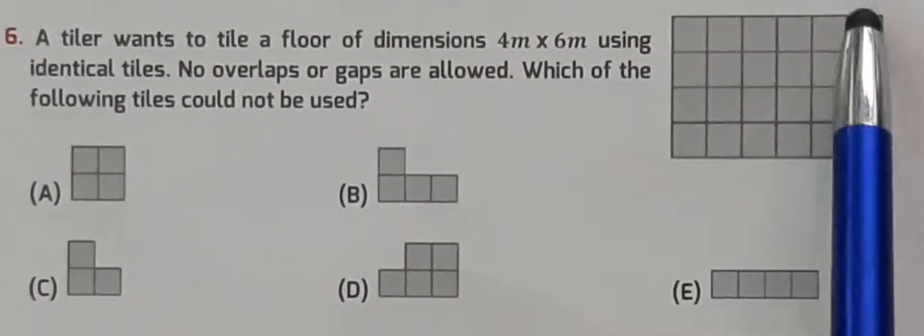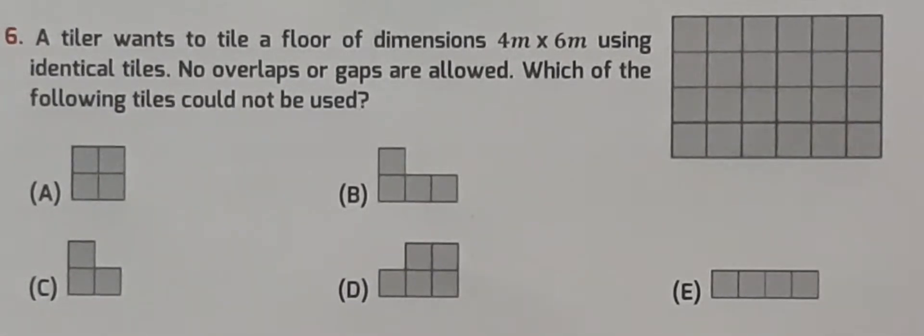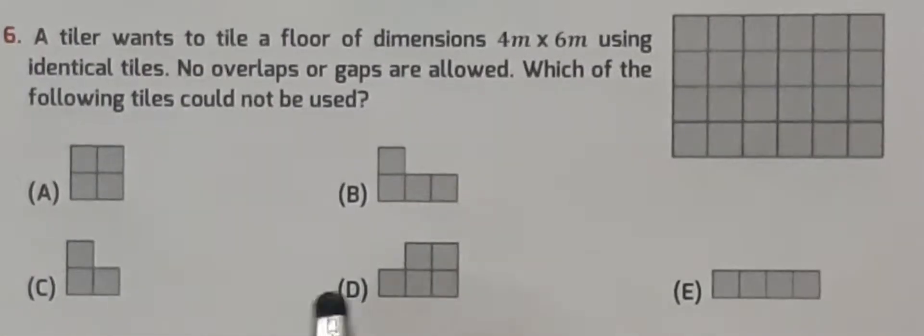So some blocks are missing using this. It means that this is our option, correct option. Option number D is our correct answer. Which of the following tiles could not be used? So option number D, this tile cannot be used for tiling this floor. So this is our answer.